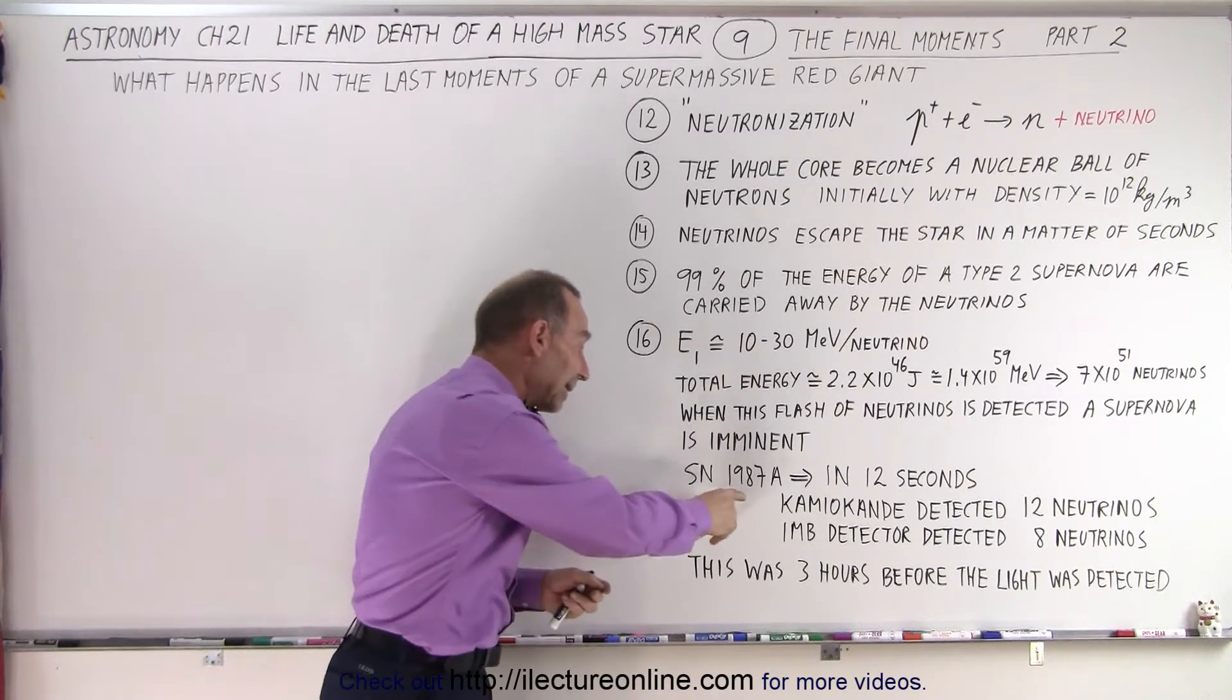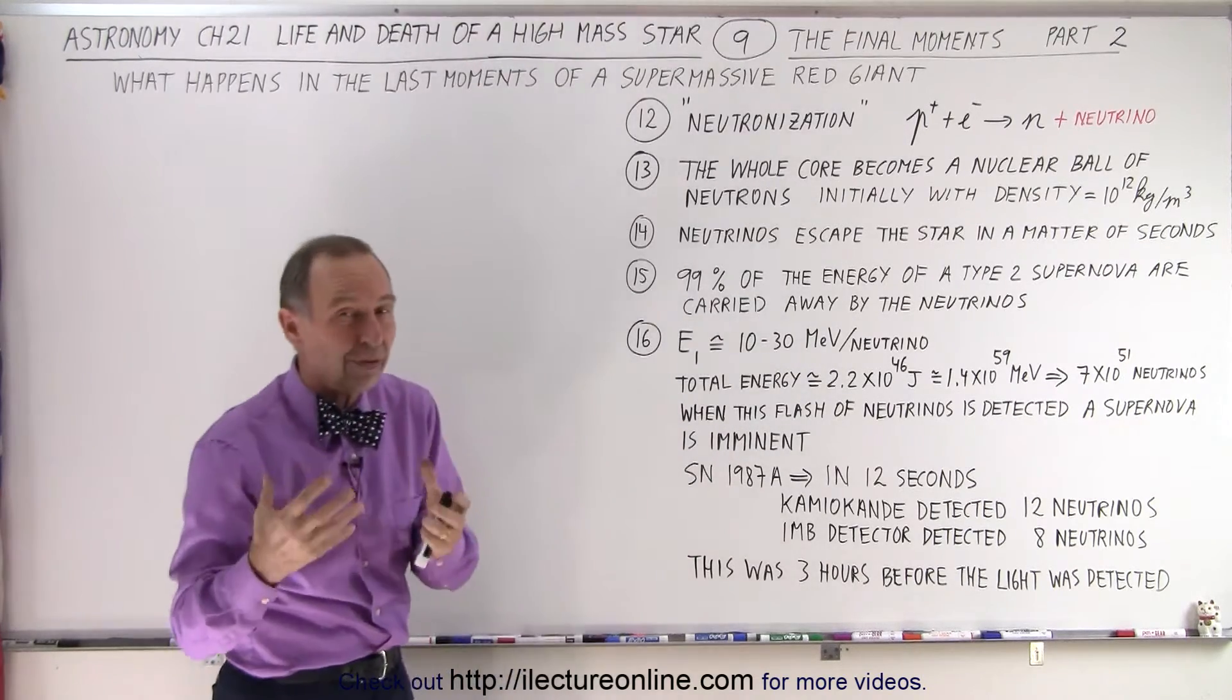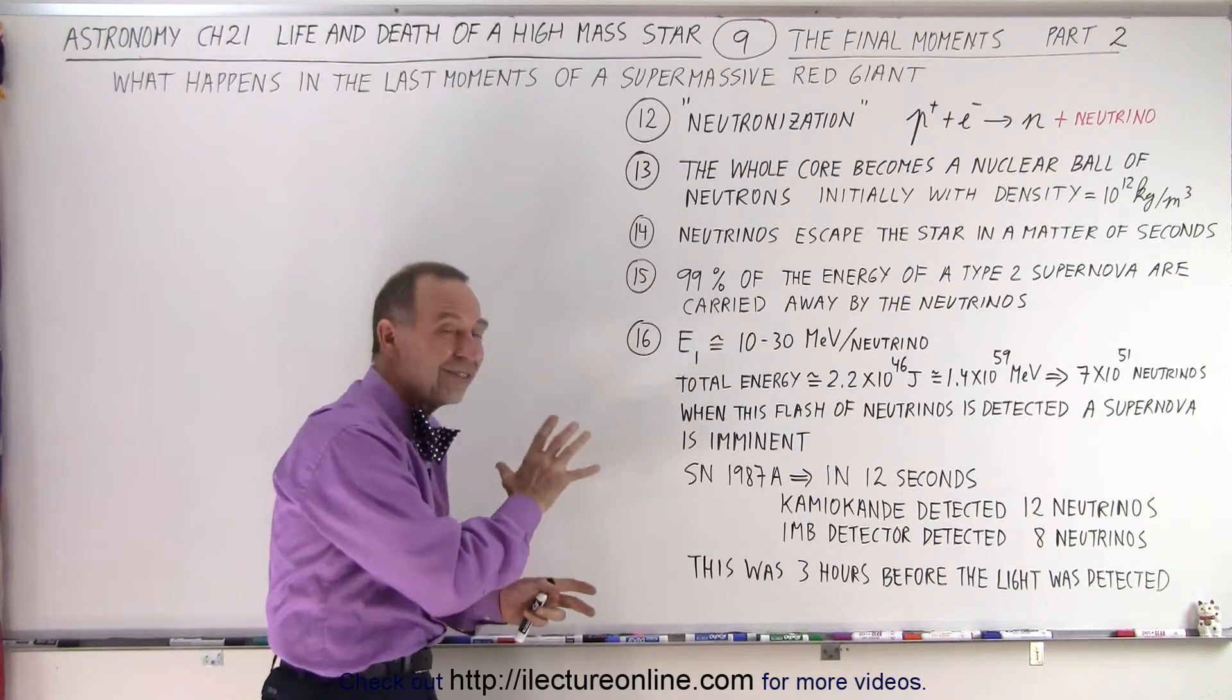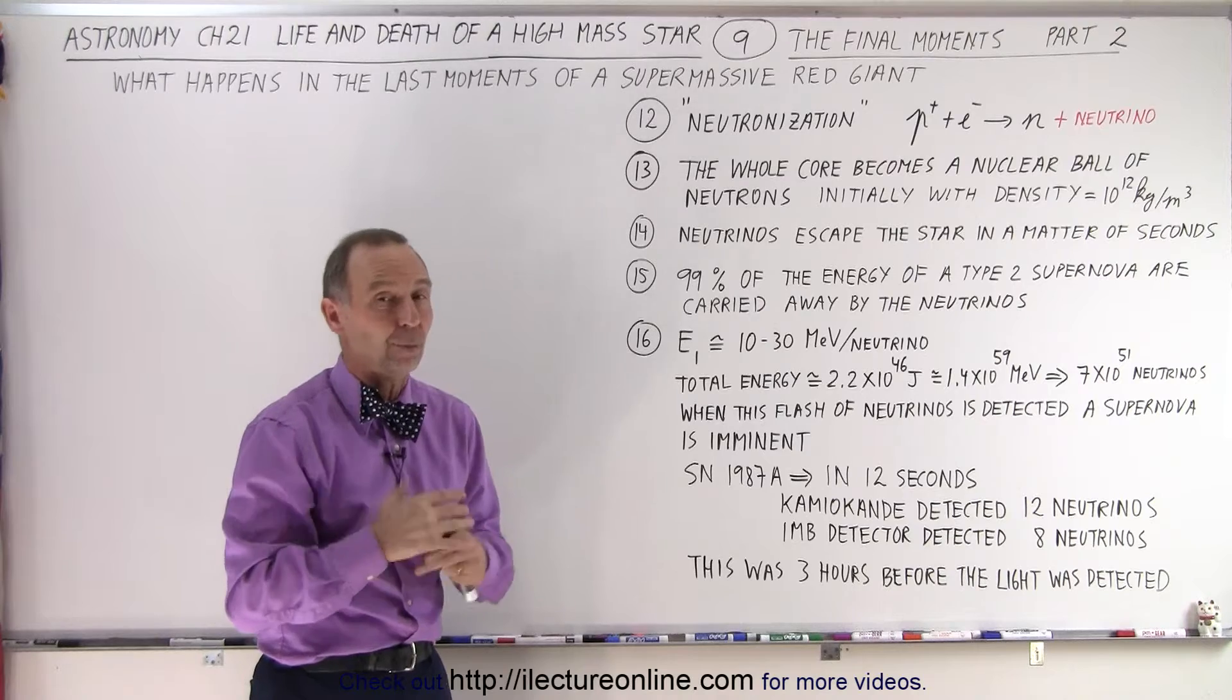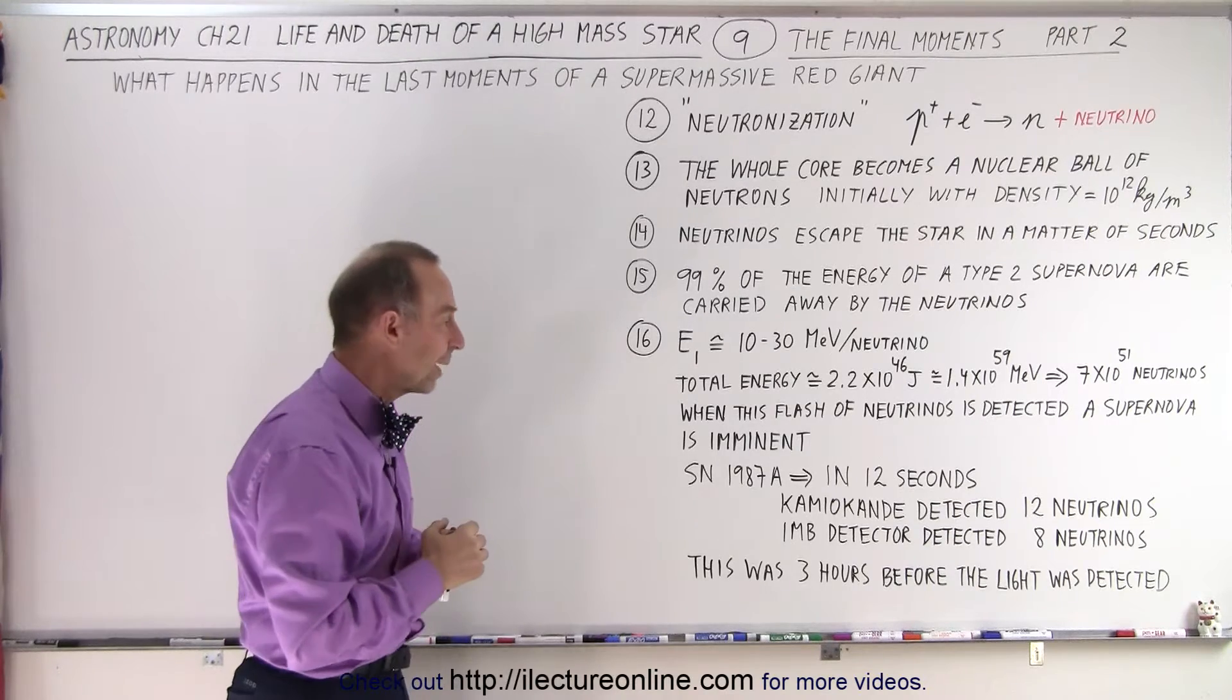Now, in 1987, we had a supernova explosion, not quite the very same type, it was a slightly different type in the Large Magellanic Cloud, one of the companion galaxies of the Milky Way Galaxy.